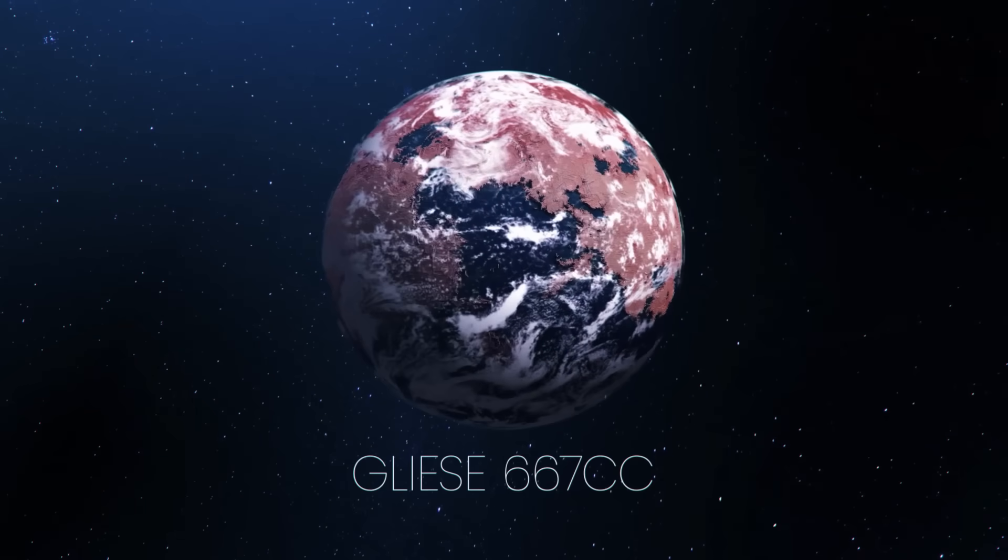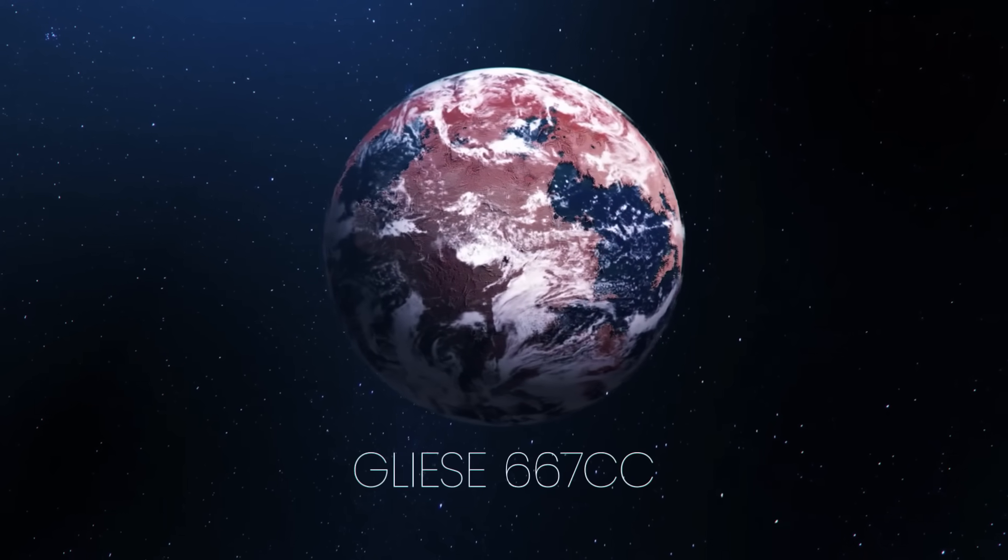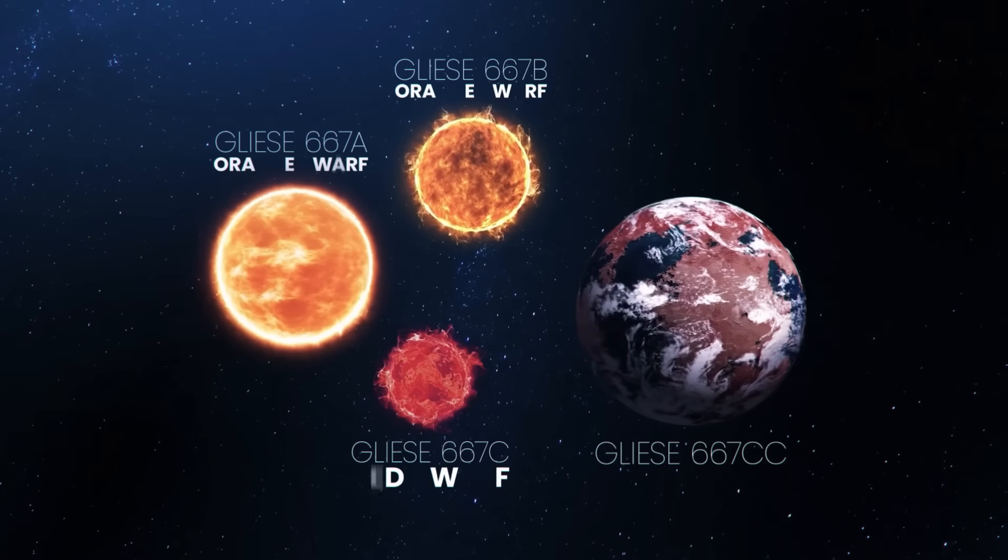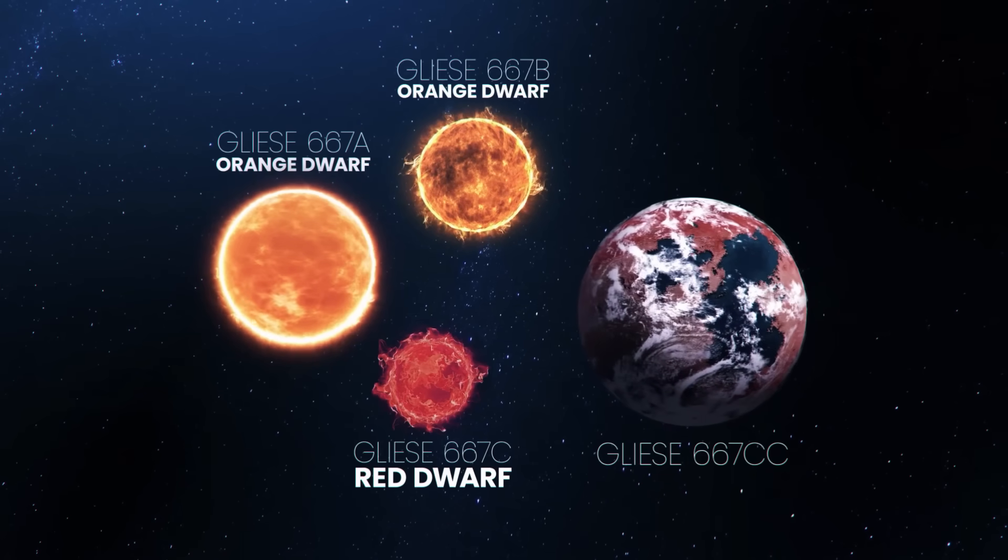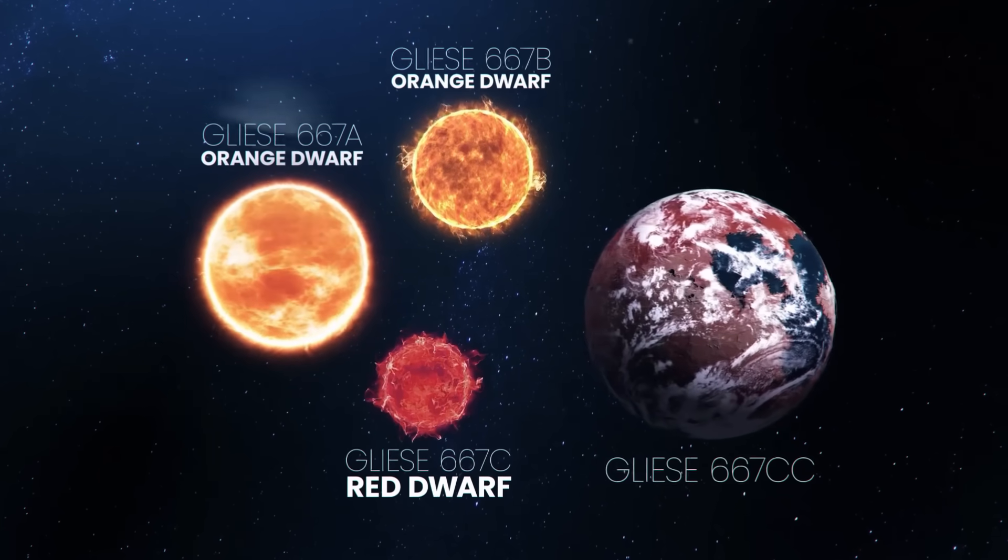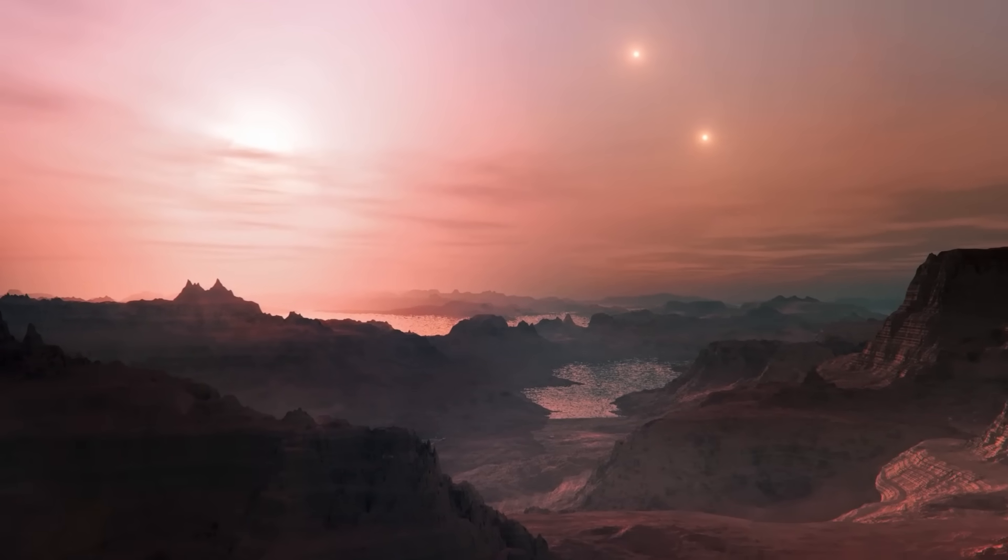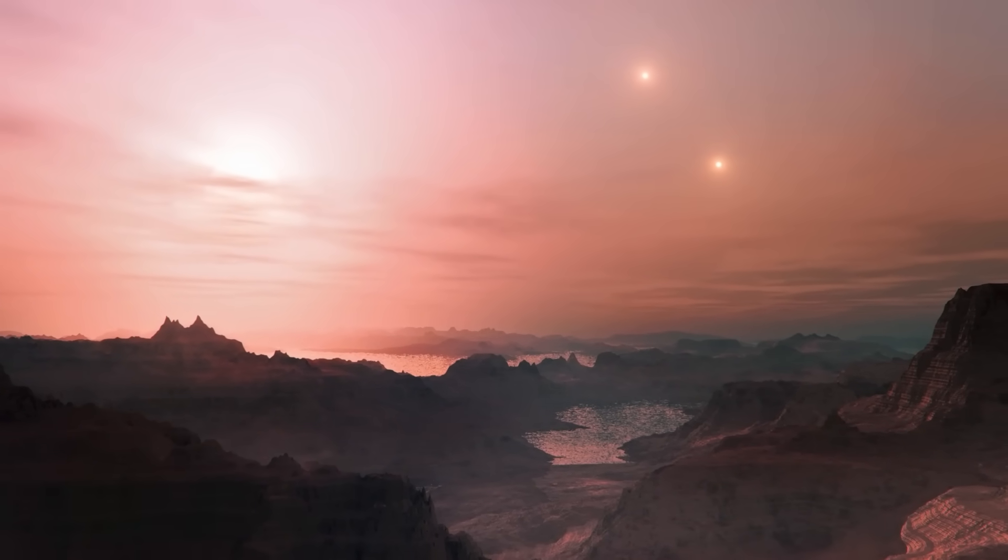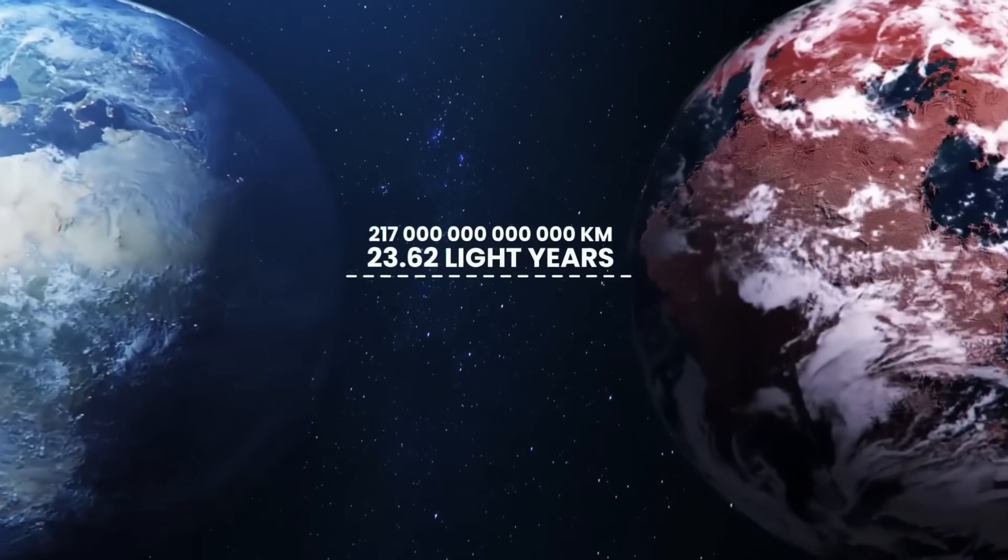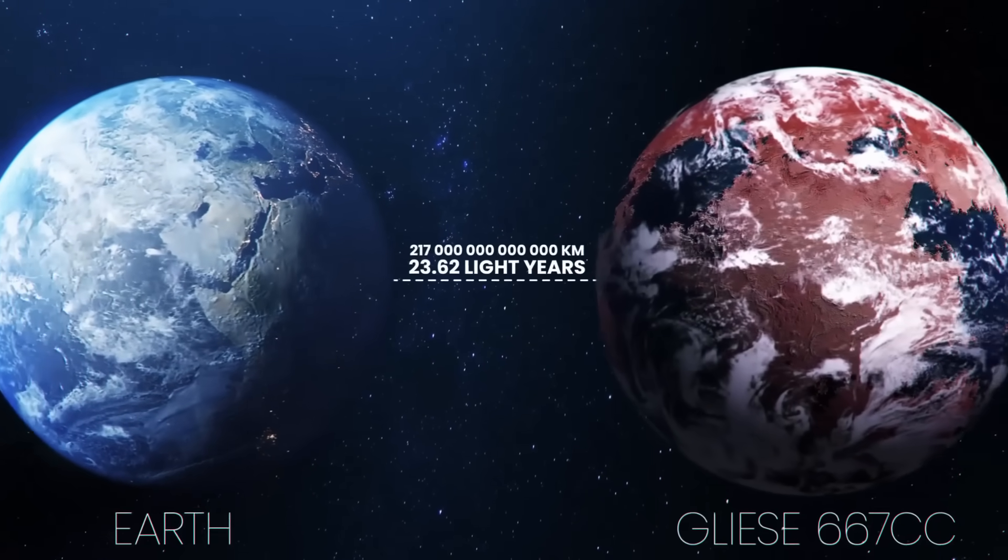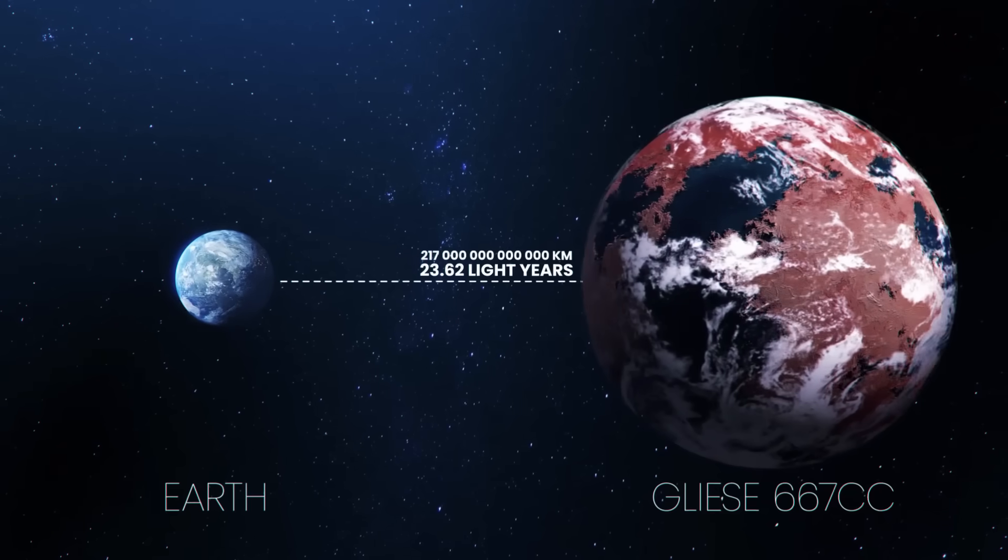Gliese 667 cc is the next closest super-habitable exoplanet which orbits a red dwarf star in the Gliese 667 triple star system, yes, three stars. If you were standing on Gliese 667 cc, this is likely what you would see in the day sky. Gliese 667 cc lies 23.62 light-years from Earth, and is a minimum of 3.7 Earth masses.